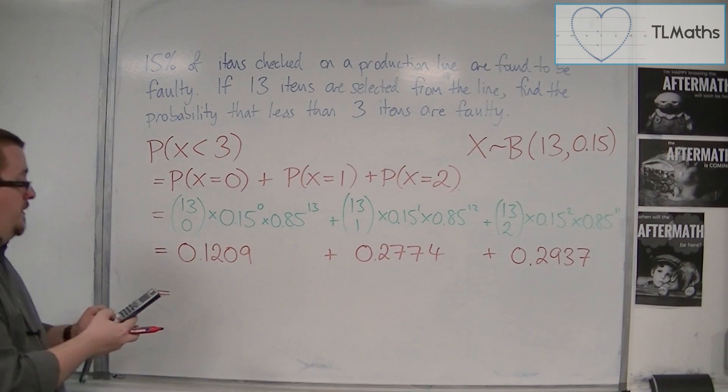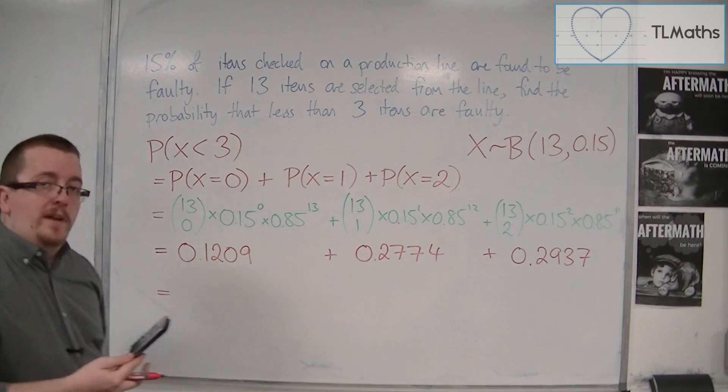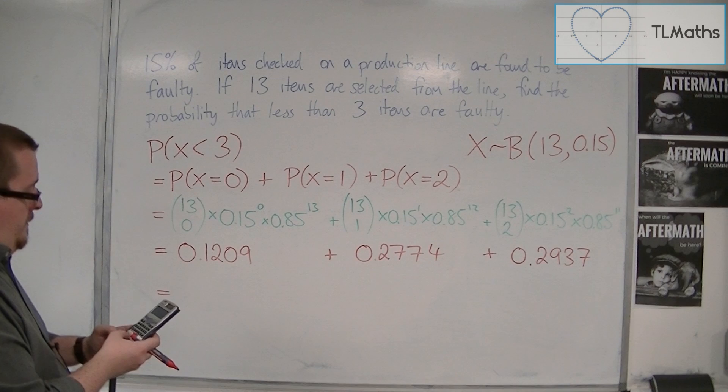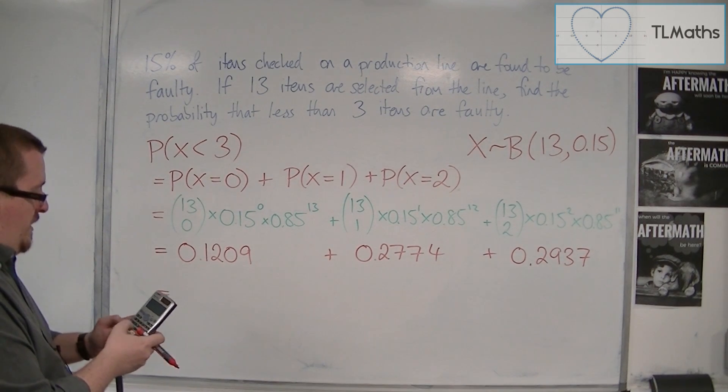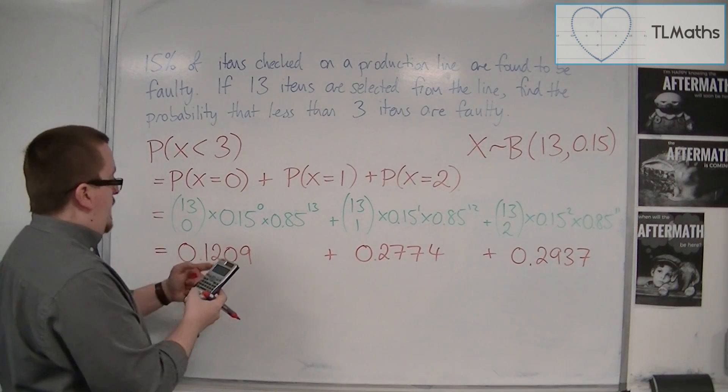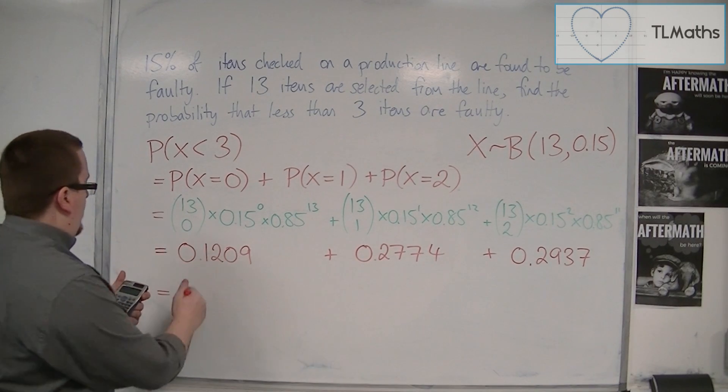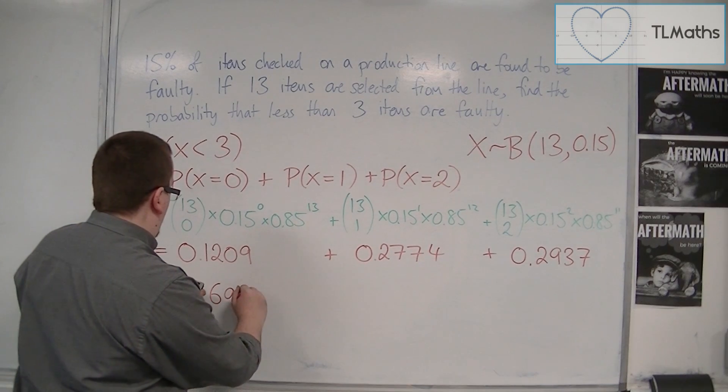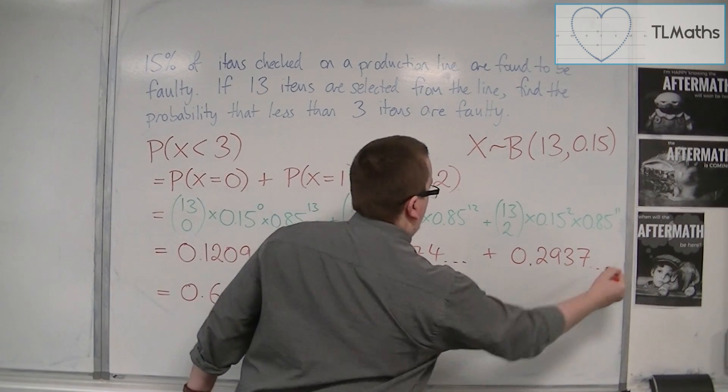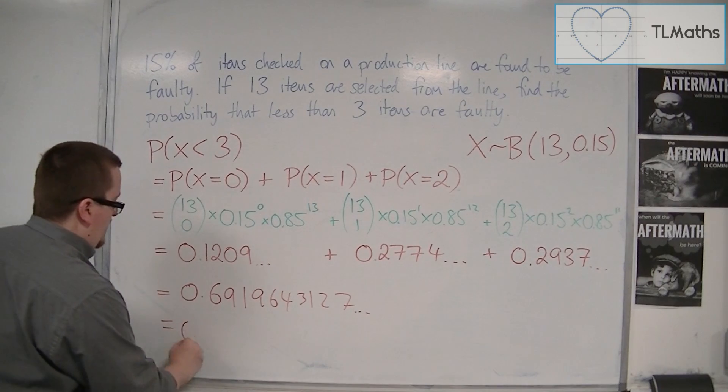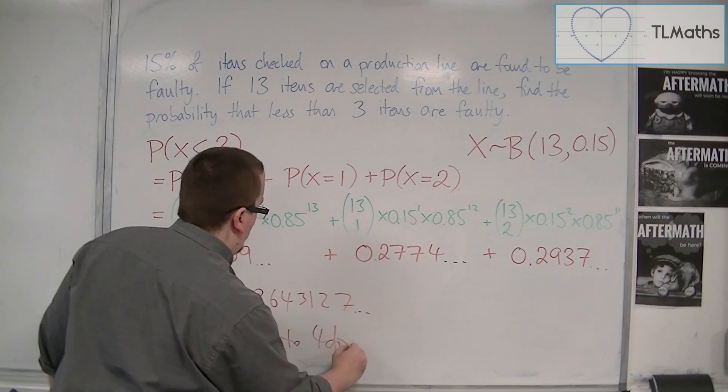And now I'm just going to add these together. So what do we get? I'll use the full calculator display when I'm actually calculating this, adding them all up rather, just so that we've got it as accurate as possible. And this gives 0.6919643127, so this is 0.6920 to 4 decimal places.